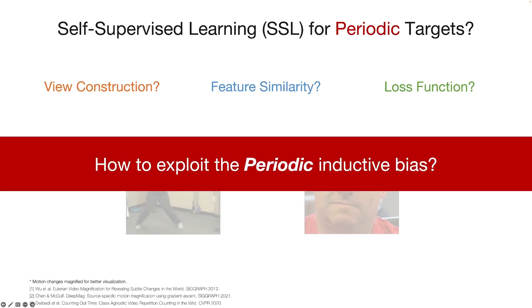Given these observations, how should we exploit periodic inductive bias to design suitable SSL methods for periodic learning?